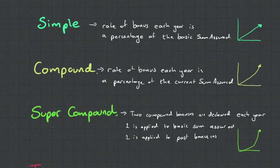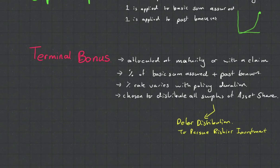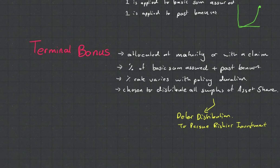Now normally these bonuses are known as terminal bonus. What this is, it's when you make your claim you then get your bonus. It's allocated at maturity or with a claim. It is a percentage of a basic sum assured plus the past bonus. The percentage rate varies with policy duration and is chosen to distribute all surplus of the asset share.